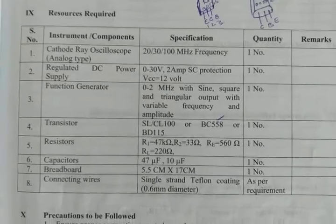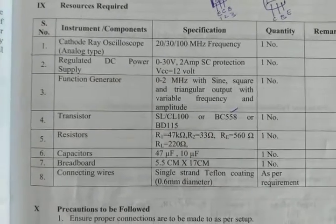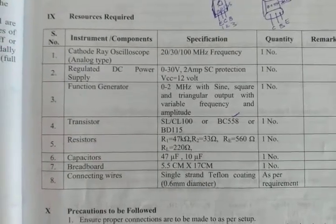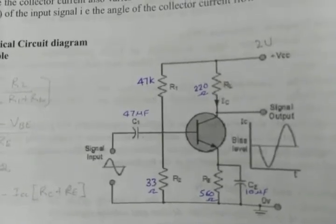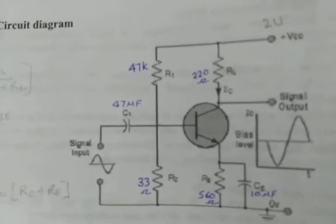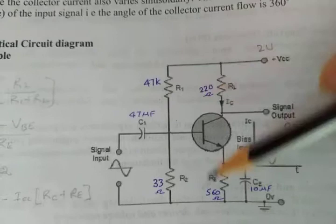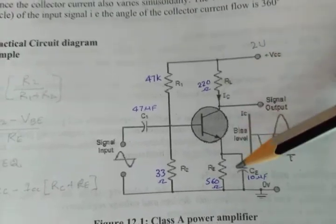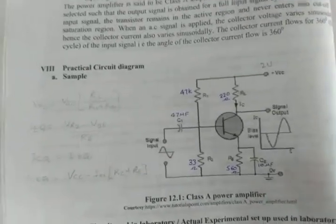The transistor used for our practical is BC558. We can use other transistors BD115 or SL or CL100 as well. The VCC can be provided 12V. The coupling capacitors we have used on the input side are 47µF and the emitter bypass capacitor is 10µF. The potential divider resistors R1 and R2 are 47kΩ and 33Ω. The load resistor RC is 220Ω and RE is 560Ω. VCC we have provided 2V and it is working properly.